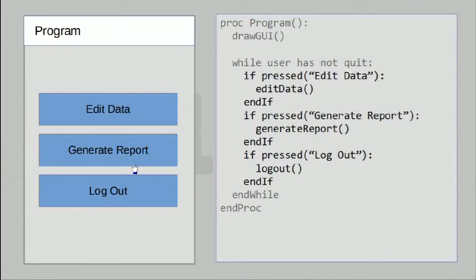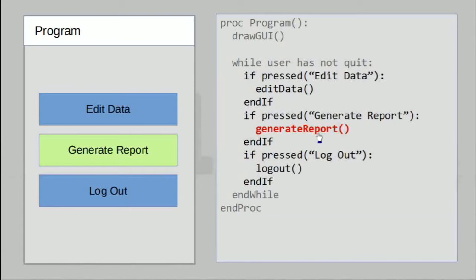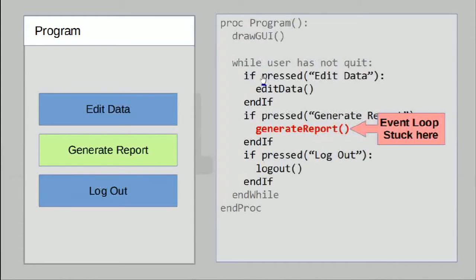If I were to do that, the generate reports function will run in the loop. Now normally this is a process that could take some time, so imagine if we're actually stuck on generate reports for a while — it is not going through the entire loop. In fact, the events loop has ground to a halt at this statement. Since we're not looping, we're not able to check if any of the other buttons are being pressed, and as a result the program is actually unresponsive.